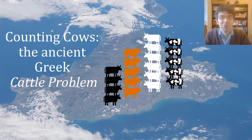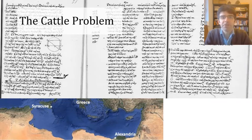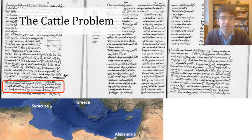Welcome everyone to this video on the cattle problem from ancient Greece. The cattle problem is actually a poem, and in the two manuscripts where it's preserved there's a heading that says Archimedes either found or invented it and sent it to the scholars of Alexandria.